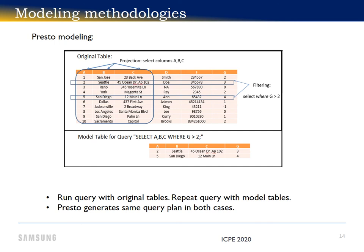To model pushdown benefit operations on the Presto cluster, we use a slightly different approach. We create and populate smaller tables that we call model tables. These model tables contain only the rows and columns that would be selected by a computational storage engine executing the scan, filter, and projection operations defined by the query. We repeat the query using the model table and compare results against the same query using the original table.